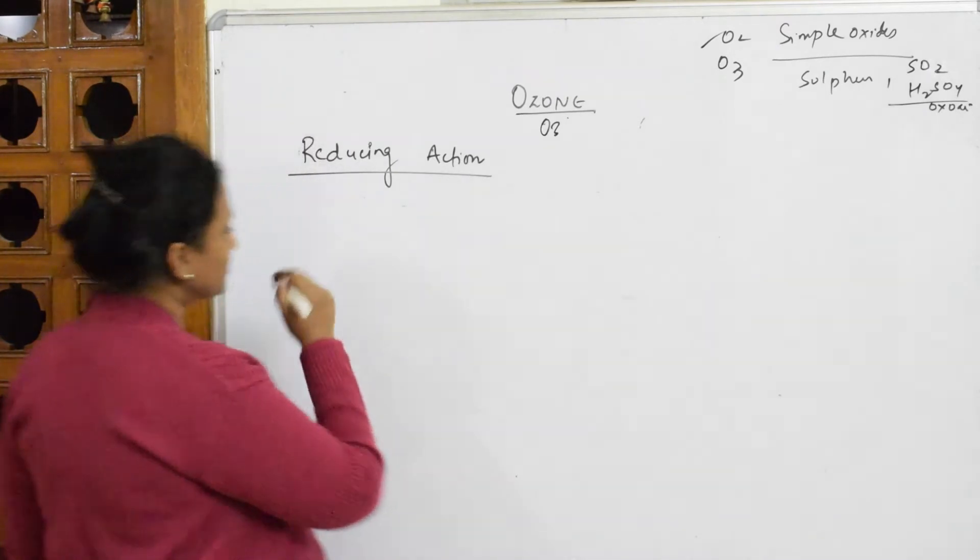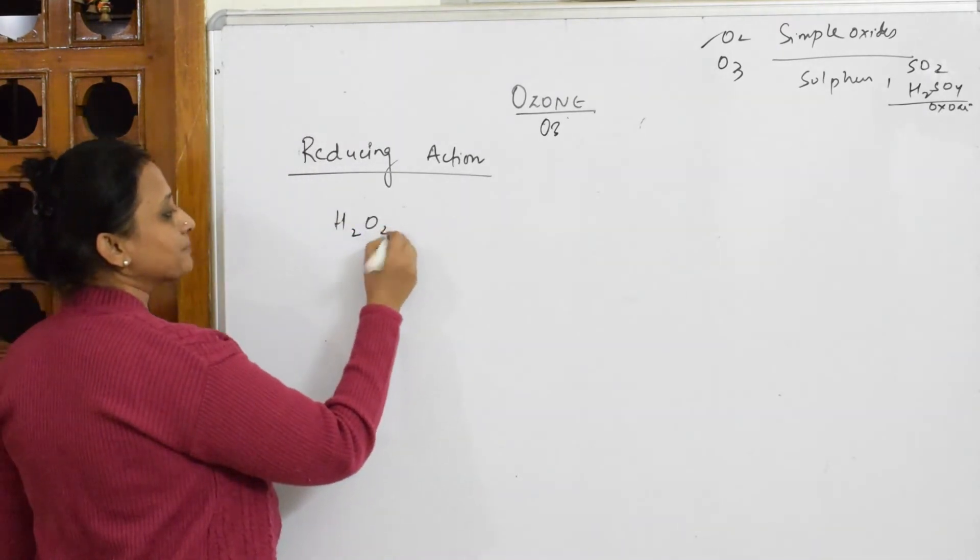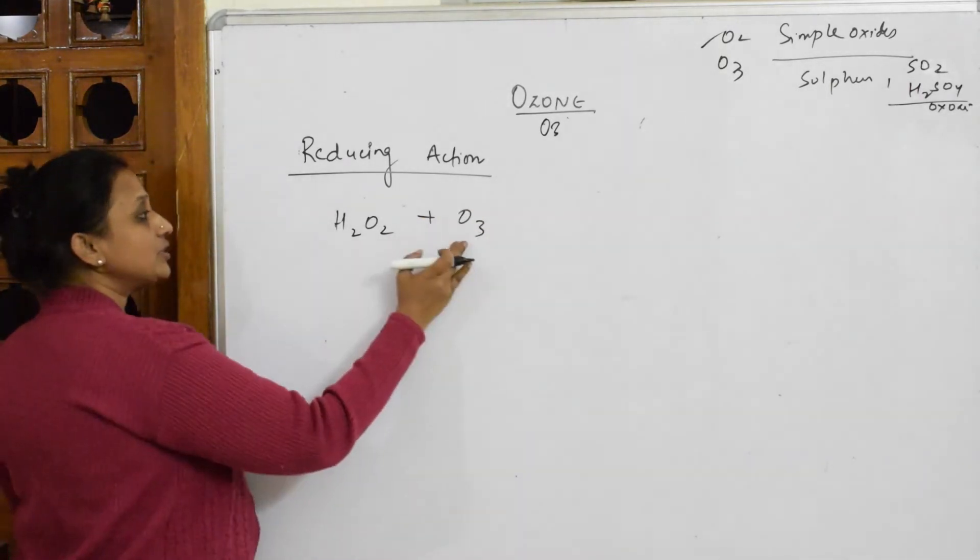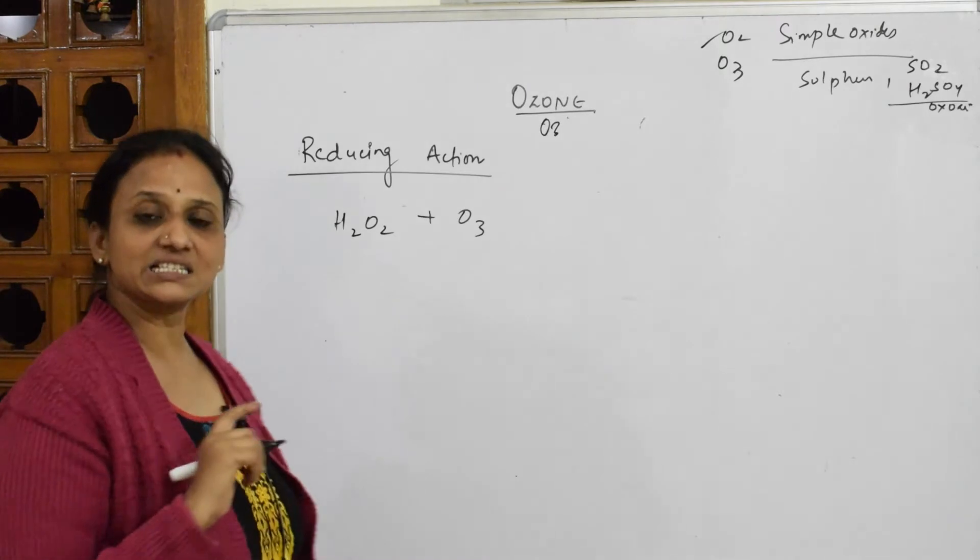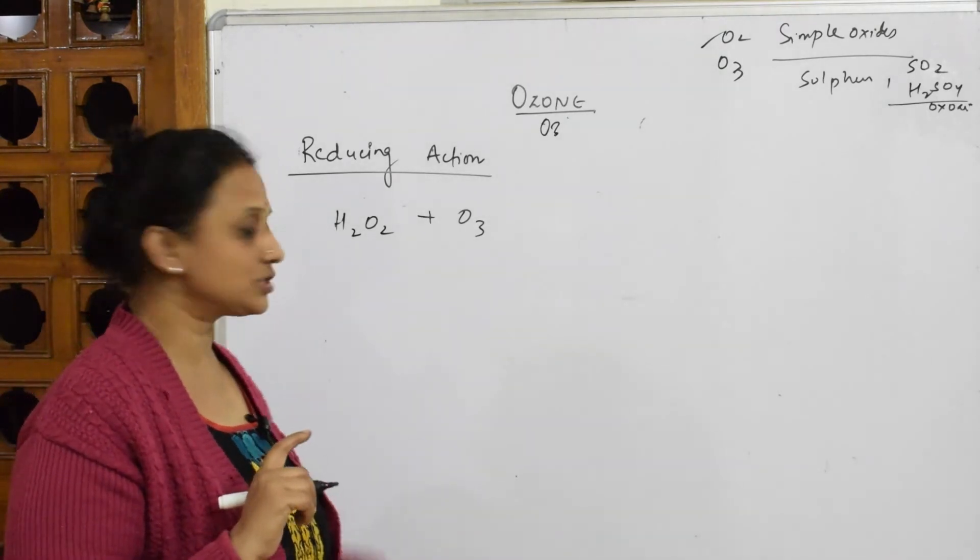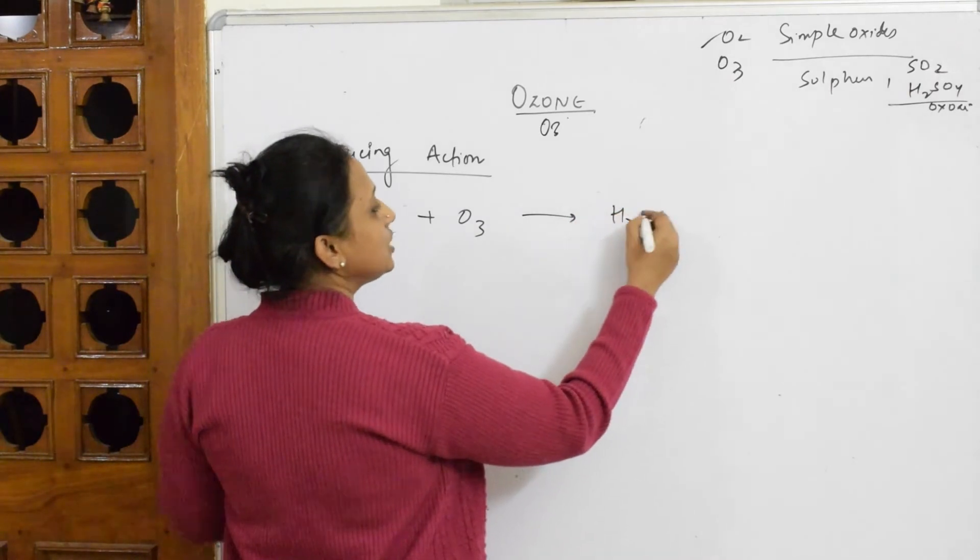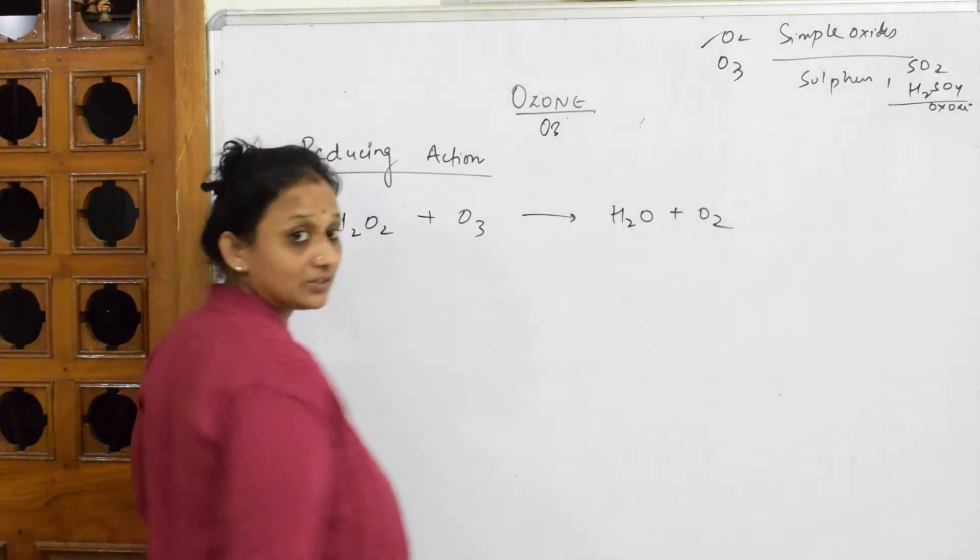That is the reducing character. Suppose I take hydrogen peroxide and add ozone. This will show the reducing action. When you add ozone, which we've also seen is a form of preparation for oxygen, hydrogen peroxide immediately gets converted to water plus oxygen.